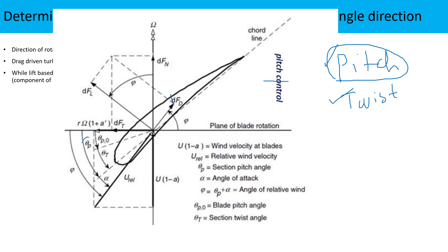The blade section pitch angle theta_P is a combination of two angles. The first is the twist angle — the same type of rotation as pitch, but different for every section along the radius, which is why we call it twist. The second is theta_P0, the global pitch angle or tip pitch angle. The angle given at the tip is implemented for all sections of the blade, so it is the same for all sections — hence 'global pitch angle'.